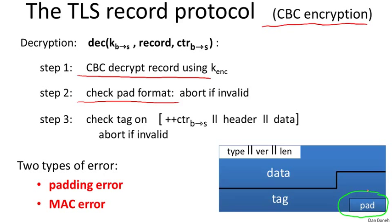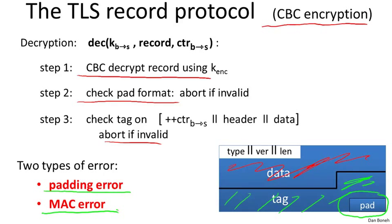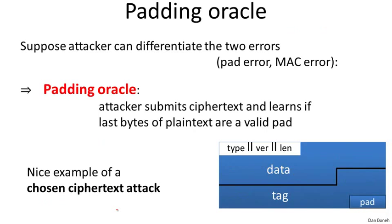If the pad has the correct format, the next thing that happens is the MAC is checked — the tag is checked. If the tag turns out to be incorrect, the record is rejected. If the tag is valid, then the remaining data is considered authentic and is given to the application. So there are two types of errors in TLS decryption: a padding error and a MAC error. It turns out it's very important that the adversary not be told which of these errors occurred.